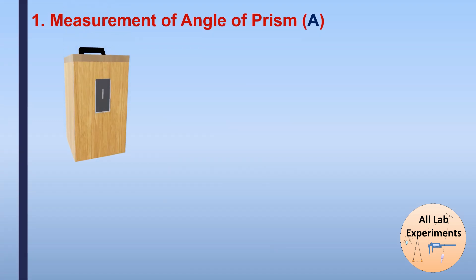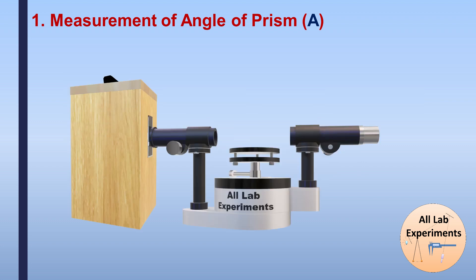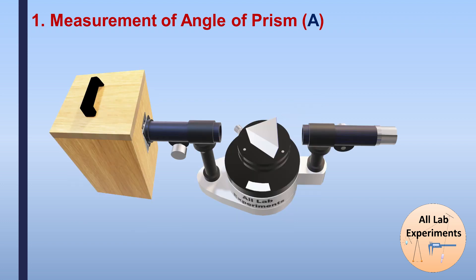To measure the angle of prism, we need a sodium lamp covered using a wooden box with a vertical orifice, and a spectrometer. Light from the sodium lamp enters the collimator through a slit adjusted at the beginning. The prism is placed on the prism table with its rough side facing the telescope, and yellow sodium light is reflected through the smooth surfaces.